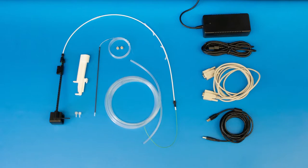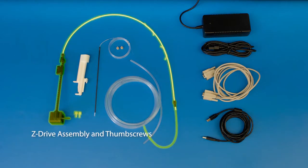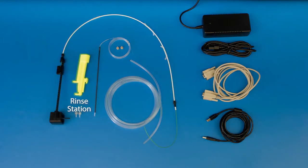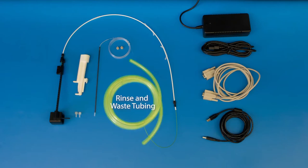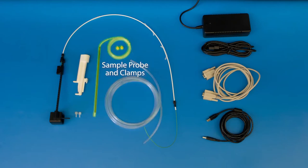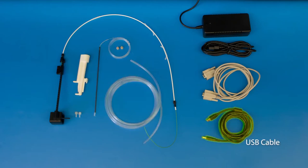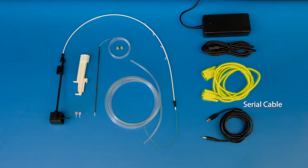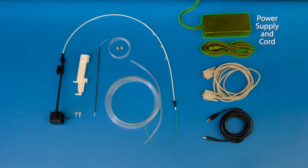You will be installing the Z drive assembly and thumbscrews, the rinse station, rinse and waste tubing, the sample probe and clamps, a USB cable or serial cable, and the power supply and cord.